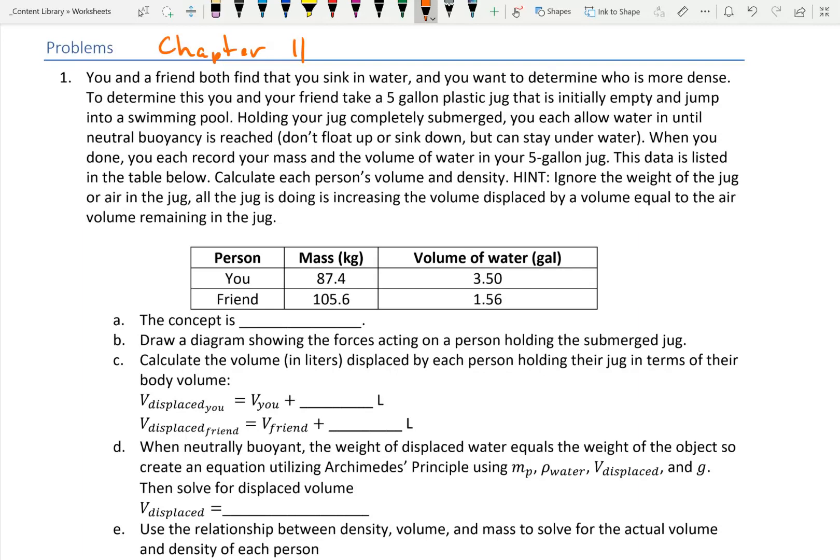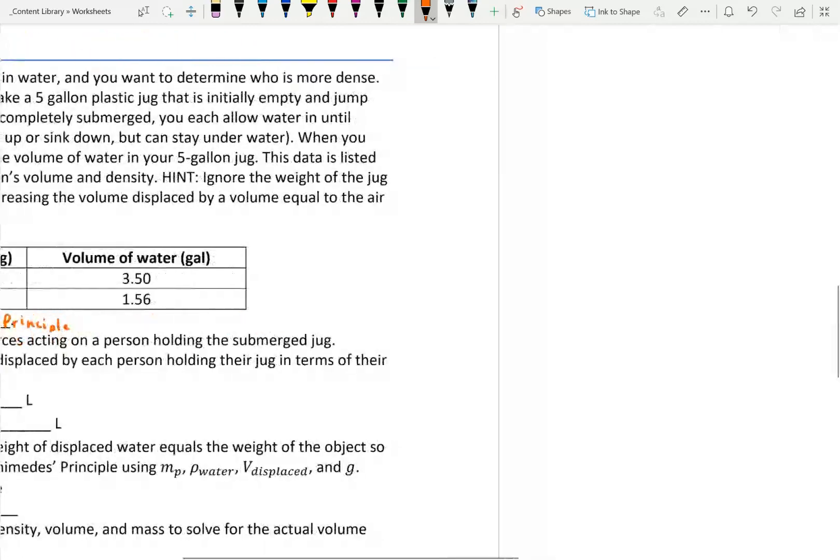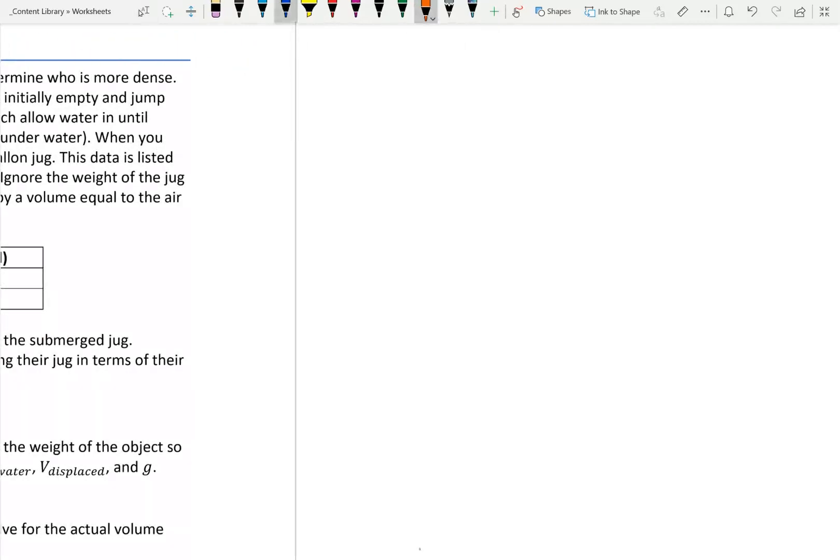We have these numbers, and we want to find each person's actual volume and actual density. What's the concept? We've got density, we have floating. Floating is a hot tip. It's going to be Archimedes' principle. Pretty much anything that has to do with floating and buoyancy is Archimedes' principle.